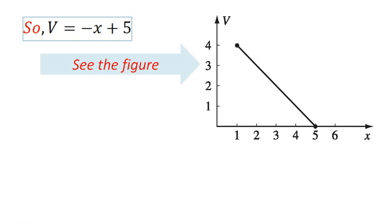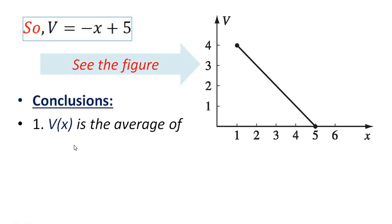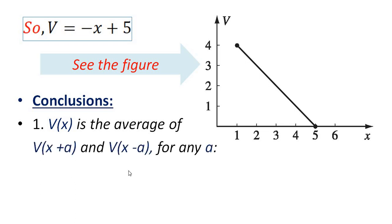See the figure. When x = 1: V = −1 + 5 = 4. When x = 5: V = −5 + 5 = 0, confirming the boundary conditions. Conclusion: V(x) is the average of V(x + a) and V(x − a) for any value of a.